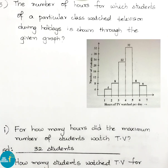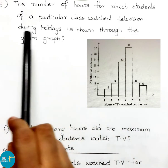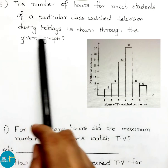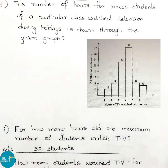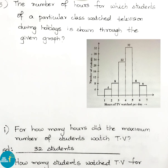Question number 5. The number of hours for which students of a particular class watch television during holidays is shown through the given graph. On the x-axis we have hours of TV watched per day, and on the y-axis the number of students. Question 1: for how many hours did the maximum number of students watch TV? The maximum number is 32 students, who watched TV for 4 to 5 hours.